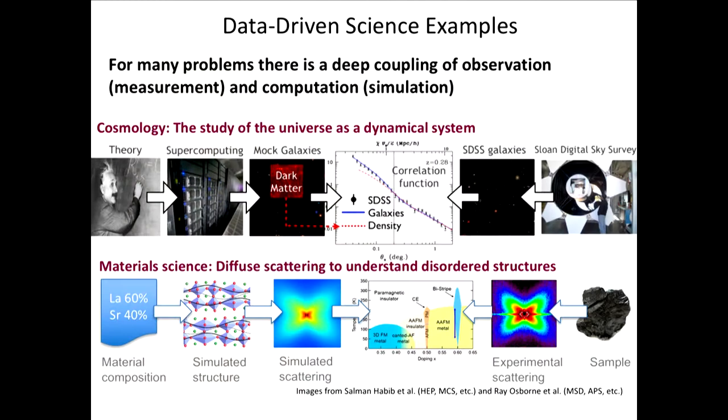I'm going to talk about the convergence between simulation, data analysis, and machine learning, and how it might be pushing us in computer architecture. If I was giving this talk five or six years ago, I would talk about this slide. There are two examples, one from cosmology and one from material science, that show on the left, theory and computing pushing towards some problem solving in the middle, joined from the right by large-scale data analysis or collection.